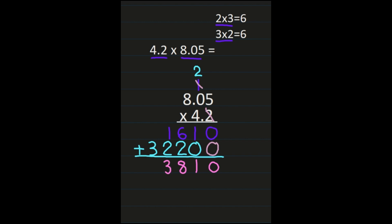I'll take the same steps to place the decimal in my answer, looking at how many places are behind the decimal in both factors. In 8 and 5 hundredths, there are 2; in 4 and 2 tenths, there is 1 — so there's a total of 3. In my product, I'll move the decimal 3 places to the left. That trailing 0 at the end behind the decimal place isn't needed, so my final answer is 33 and 81 hundredths.